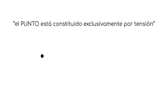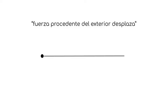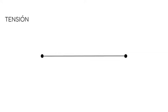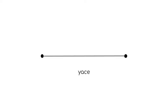Según Kandinsky, el punto está constituido exclusivamente por tensión. Cuando una fuerza procedente del exterior desplaza el punto en cualquier dirección, se genera el primer tipo de línea, en la cual se unen tensión y dirección. La recta, en su tensión, constituye la forma más simple de la infinita posibilidad de movimiento. La línea recta yace en el plano como vestigio de vida.